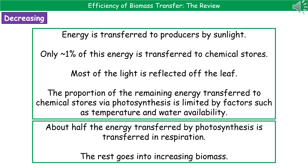However, only about 1% of the energy transferred from the sun makes it to the chemical stores. One of the main reasons for this is that most of the light from the sun is actually reflected off the leaf, so it's not even absorbed into those cells. How much of that remaining light energy ends up transferred to the chemical stores is controlled by factors like temperature and water availability.